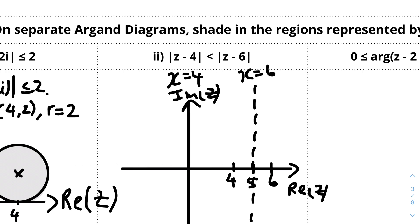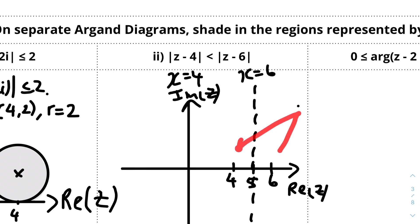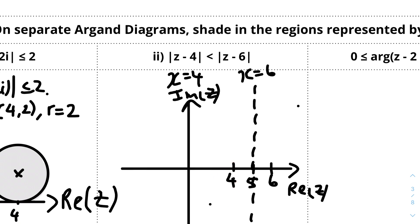We now have to determine which region to shade. The modulus of z minus 4 is less than the modulus of z minus 6, so all points in the region must be closer to x = 4 than to x = 6. Choosing a test point to the left of x = 5 shows it is closer to 4 — that's correct. So the region to shade is to the left of the dotted line at x = 5.